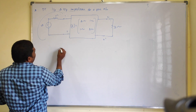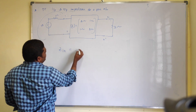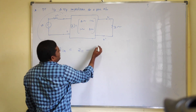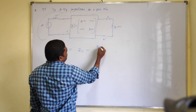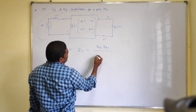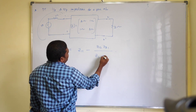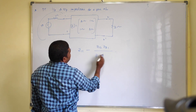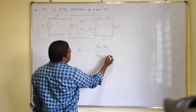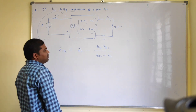We already have the formula: Z_in equals Z11 minus Z12 times Z21 divided by Z22 plus ZL. This is your formula.